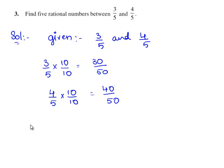Therefore, the five rational numbers between 3/5 and 4/5 are 31/50, 32/50,